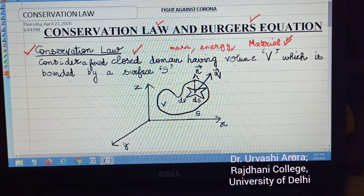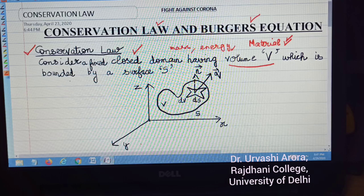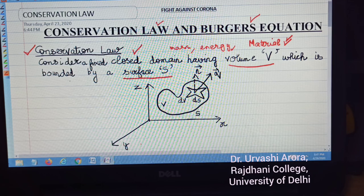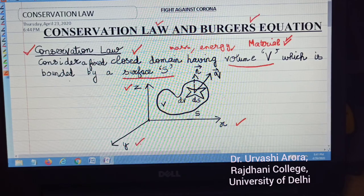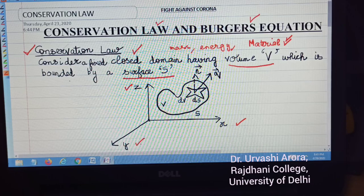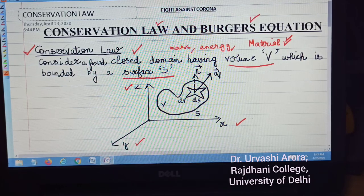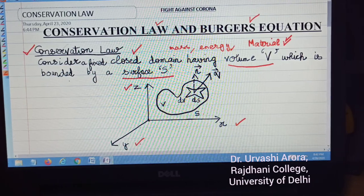We consider a volume V of the material — whether it is a liquid or a gas — and we take a fixed volume of that material. Suppose V is surrounded by the surface area S, and we are working in X, Y, Z space. So we take a volume V, and this volume V is bounded by the surface area S.